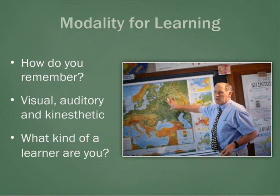The next question to answer in the puzzle is: how do you remember, or your modality for learning? The three categories to consider are visual, auditory, and kinesthetic. For the visual learner, seeing is important. For the auditory learner, the verbal is important. And for the kinesthetic learner, movement is important. Did you learn anything revealing about your learning modality?